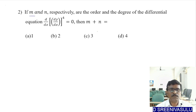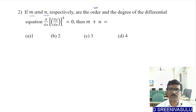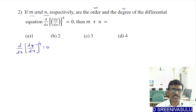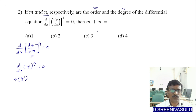Question number 2: If m and n are respectively the order and degree of the differential equation d/dx(dy/dx)^4 = 0, find m+n. Let dy/dx = y′ for simplicity. The equation becomes d/dx(y′)^4 = 4(y′)³·y″ = 0.